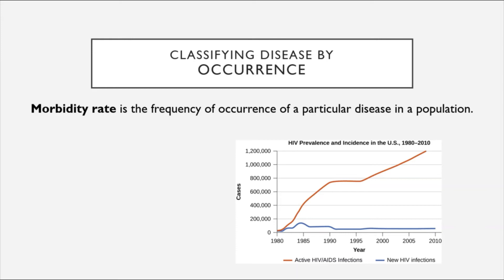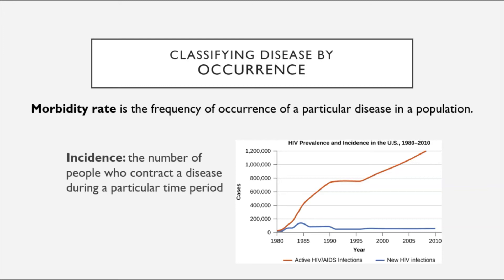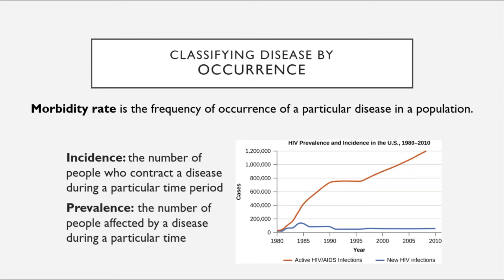When epidemiologists discuss the occurrence of a disease, they consider the morbidity rate — the frequency of occurrence of a particular disease in a population. Two numbers matter: incidence and prevalence. Incidence is the number of people who contract a disease during a particular time period — the number of new cases. Prevalence is the number of people affected by a disease during a particular time — the number of ongoing cases. It makes most sense to distinguish these in diseases that affect people long term, like hepatitis C, HIV, or malaria.